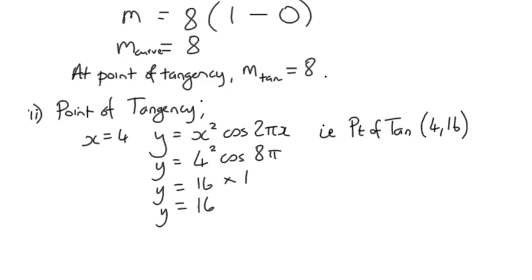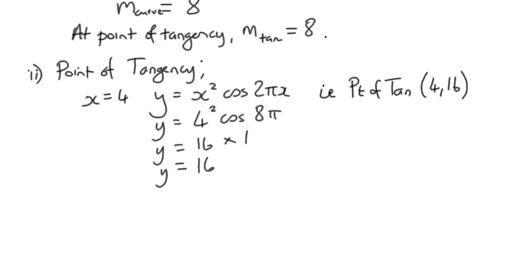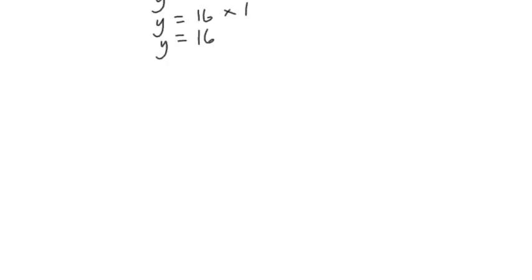So we have a point, and we have a gradient, which is all the ingredients we need to actually work out the equation of the tangent itself.